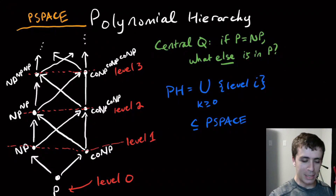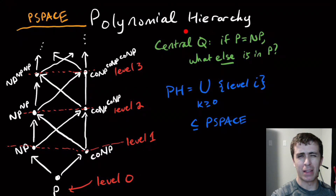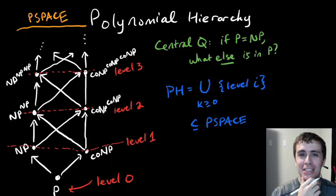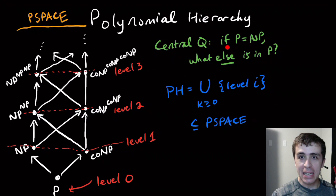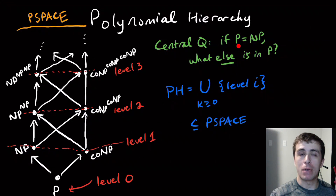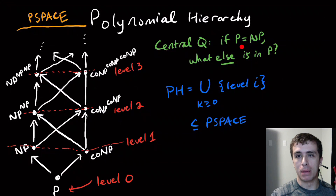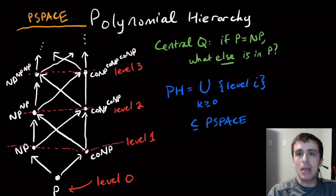Hi, so I want to talk about something called the polynomial hierarchy. The question we want to answer here is: if P equals NP — so if we can solve any non-deterministic polytime problem in deterministic time — what else is in P? Because if these are equal, maybe other things are also in there too.